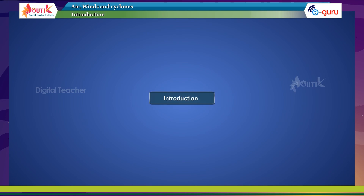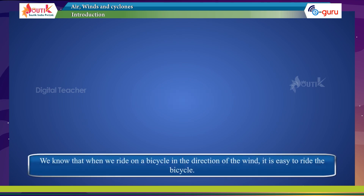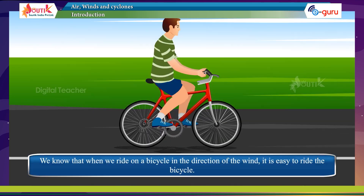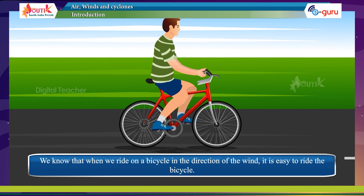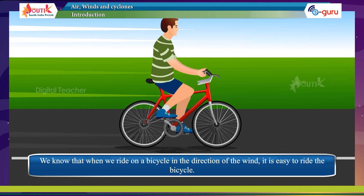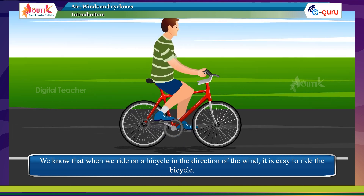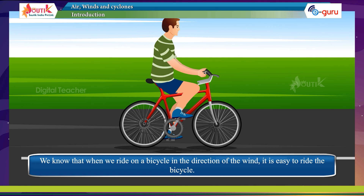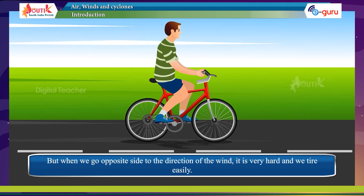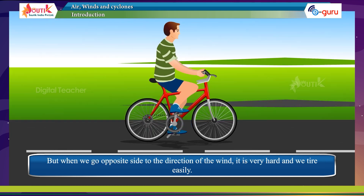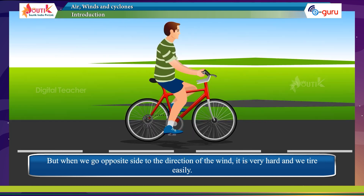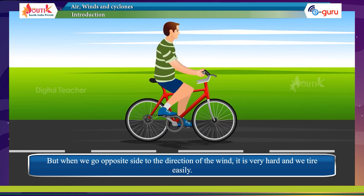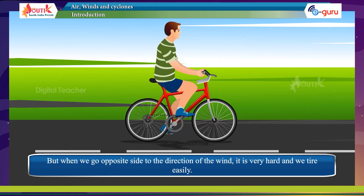We know that when we ride a bicycle in the direction of the wind, it is easy to ride. But when we go in the opposite direction to the wind, it is very hard and we tire easily.